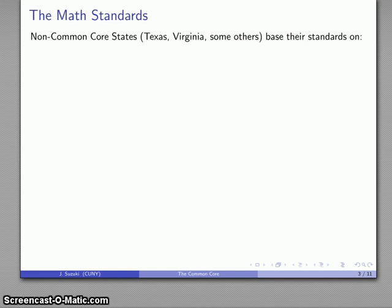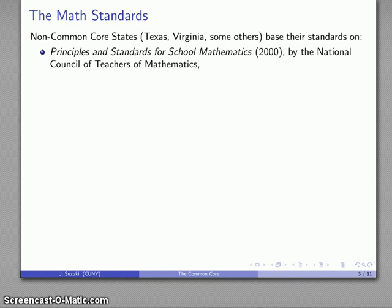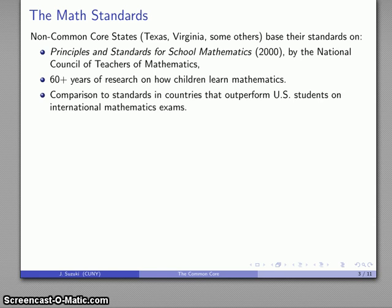So non-Common Core states, these are Texas, Virginia, a couple of others, they base their standards on Principles and Standards for School Mathematics, published just before No Child Left Behind in 2000 by the National Council of Teachers of Mathematics. They base their standards on 60 or more years of research on how children learn mathematics, and a comparison to standards in countries that routinely outperform U.S. students on international mathematics exams.